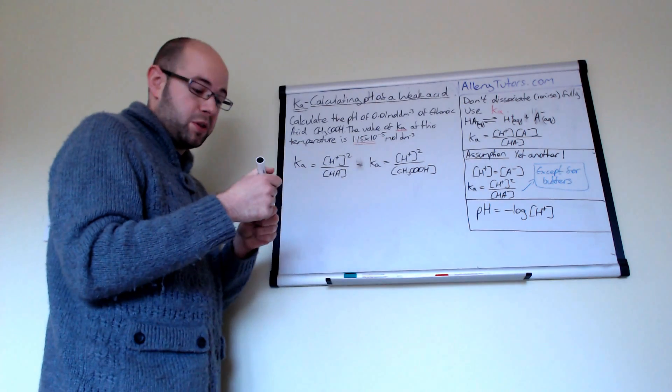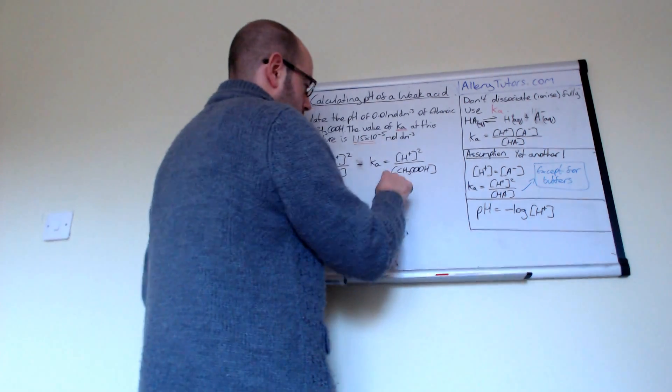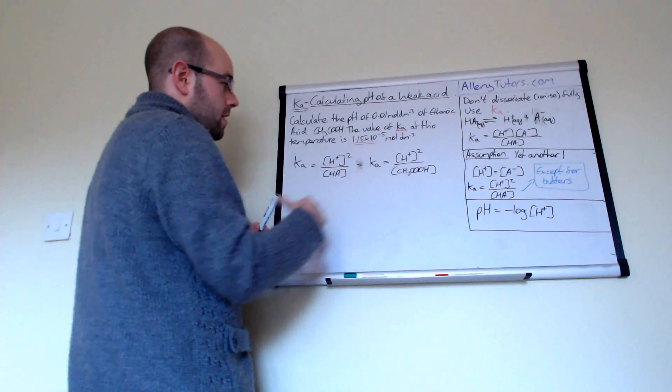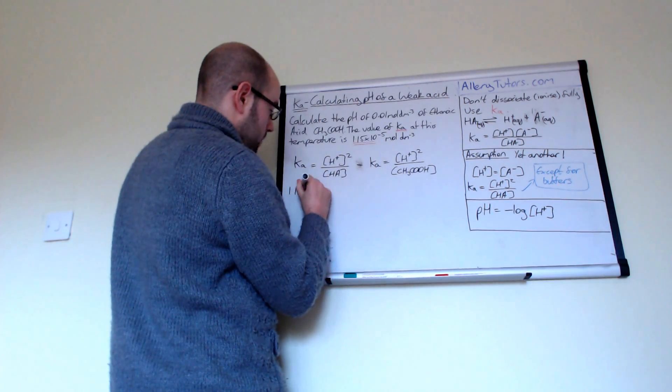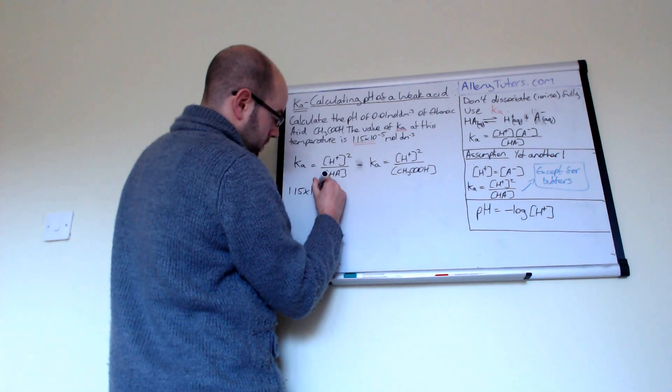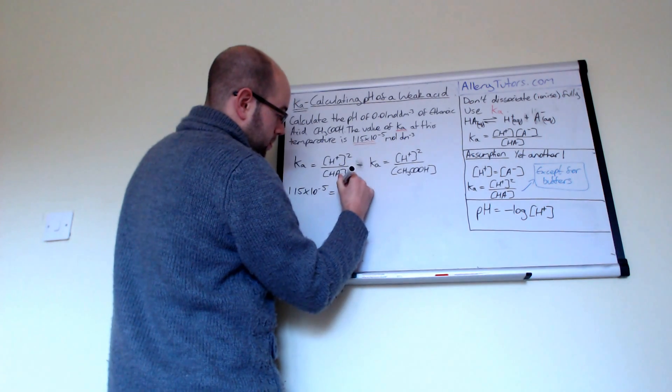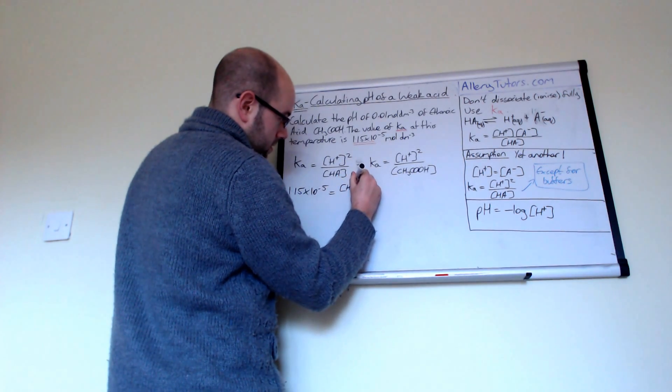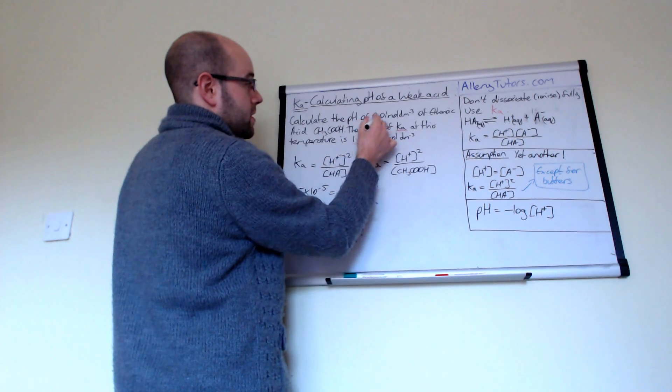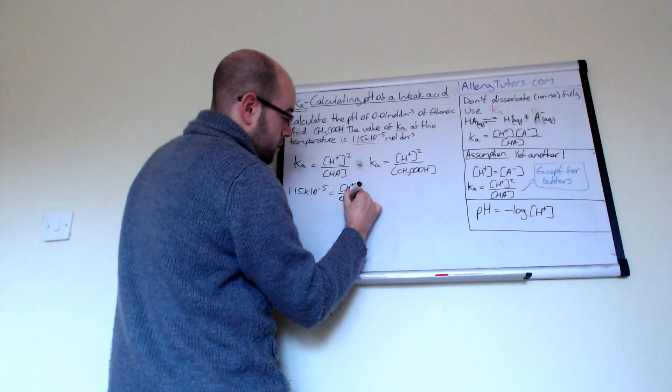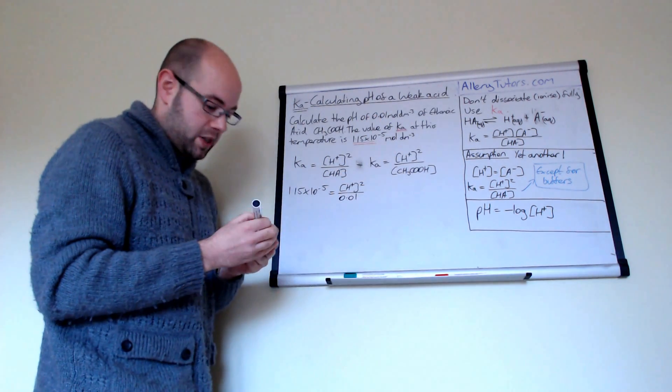Now, what we have to do is work out the numbers for it and substitute them into the equation. So if I bring this down here, we see that our value of Ka was 1.15 times 10 to the minus 5. That equals the concentration of H plus squared divided by the concentration of our acid. Now, this is our weak acid, so that's going to be 0.01 moles per dm cubed.